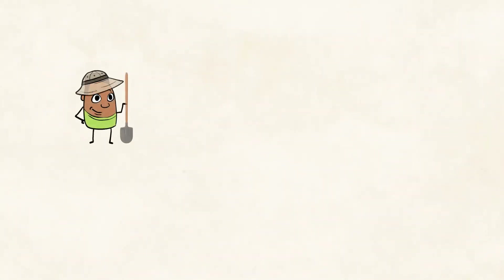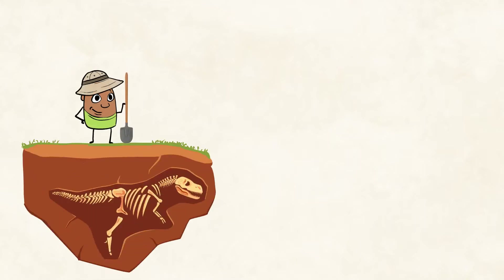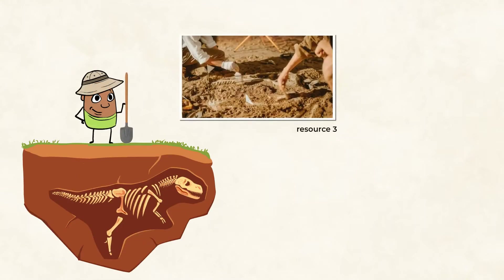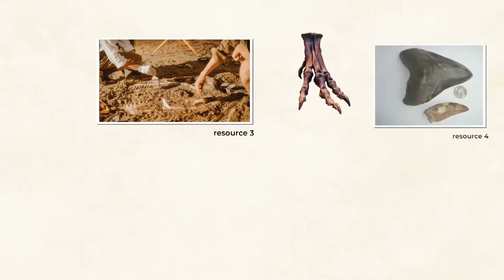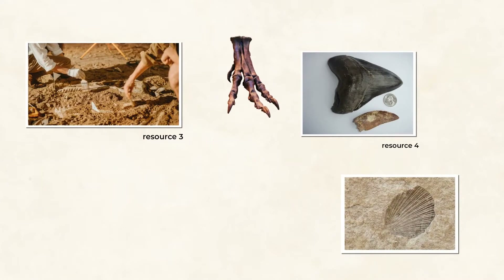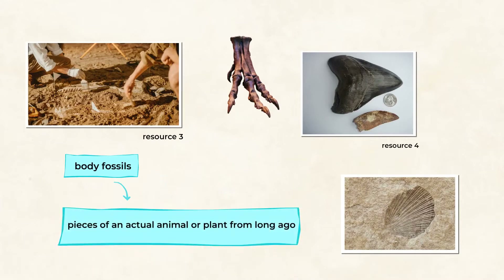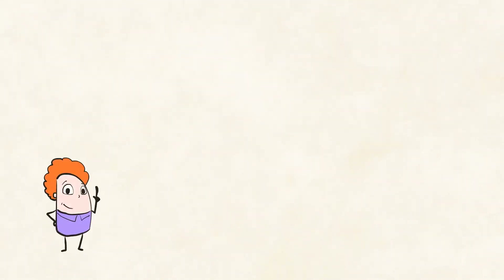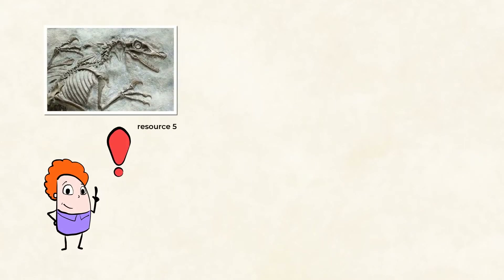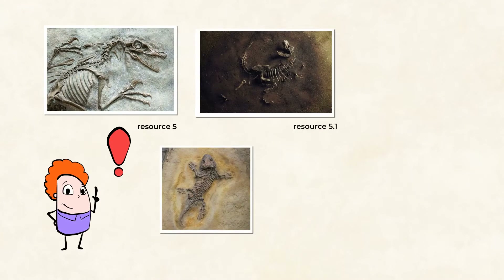Fossils are so cool. A lot of the fossils we find today include the hard parts of animals and organisms, like their bones, teeth, and shells. These types of fossils are called body fossils because they were pieces of an actual animal or plant from long ago. But this does not mean that each and every hard part of an animal will automatically become a fossil.